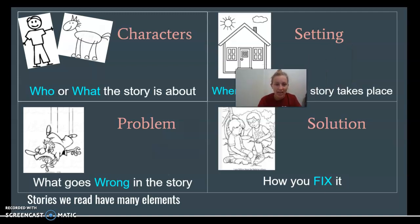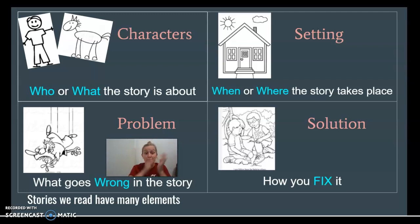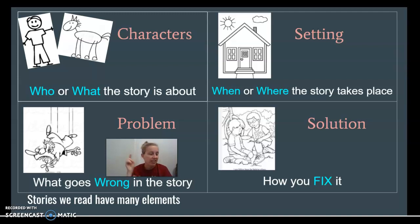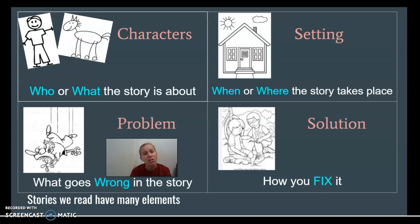Now we have the problem. The problem is when something goes wrong. The things that go wrong in our stories are usually what the author is trying to teach us a lesson from. Remember in The Little Red Hen when no one wanted to help with the bread — they didn't help with the wheat, didn't help harvest it, didn't help cook — and that was a really big problem because the little red hen was stuck all alone. That is the problem in our story, and it's usually the most exciting part.